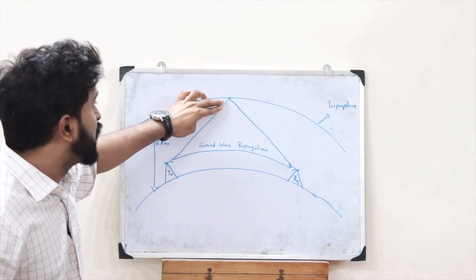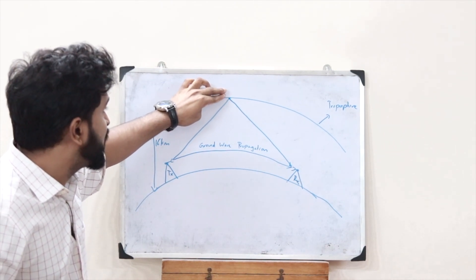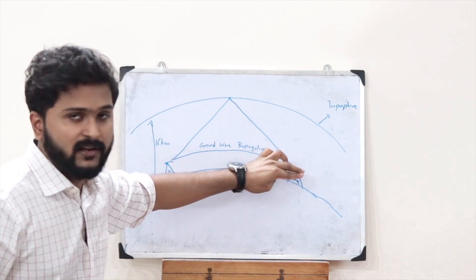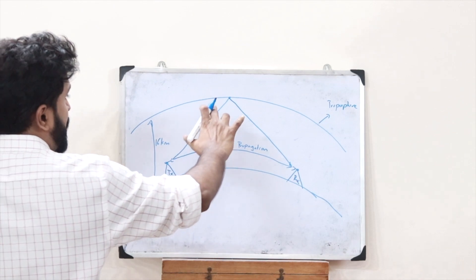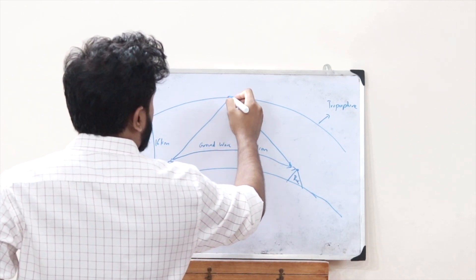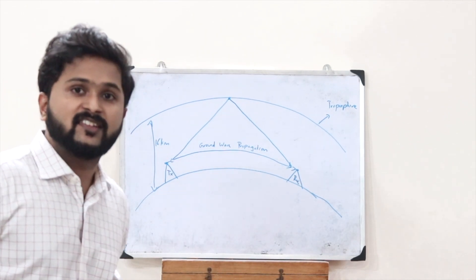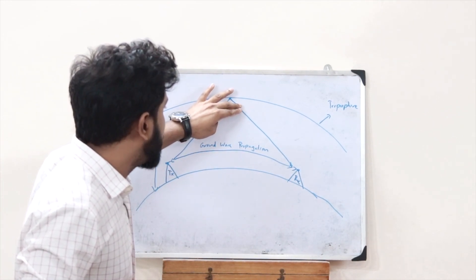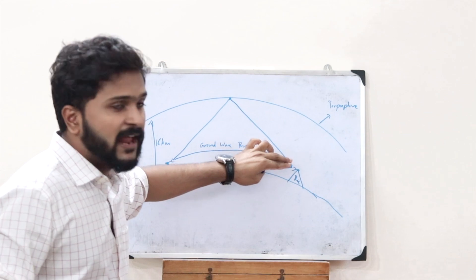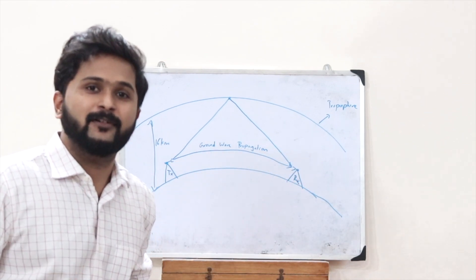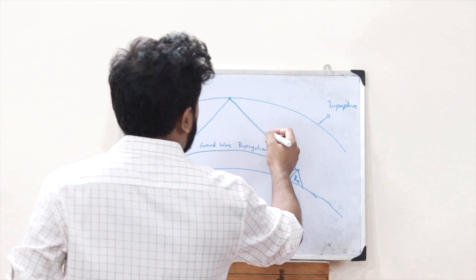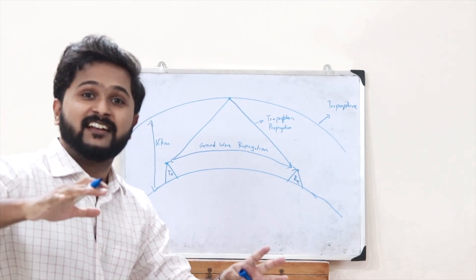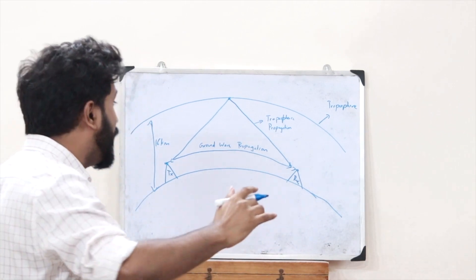At the troposphere, both reflection as well as scattering happen, and because of this the electromagnetic radio wave gets reflected back and reaches the receiver. That is what you refer to as tropospheric propagation.